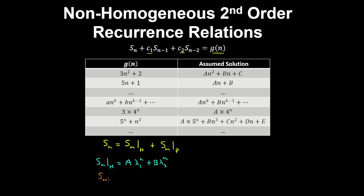Now to obtain a particular solution, we use the method of undetermined coefficients. So using this table, we assume a solution of the form to the function g of n.